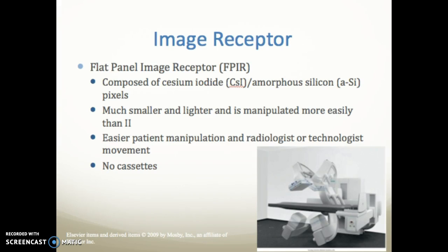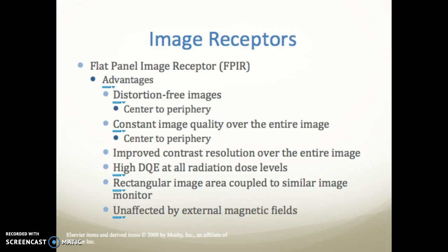The flat panel image receptor (FPIR) is composed of cesium iodide and amorphous silicon pixels. It is much smaller, lighter, and easier to manipulate than the II, making patient positioning easier for the radiologist or technologist, with no cassettes needed. Flat panel advantages include distortion-free images where the center and periphery are exactly the same, constant and improved contrast resolution over the entire image, high DQE at all dose levels, a rectangular image area compatible with a similar monitor, and it is unaffected by external magnetic fields.